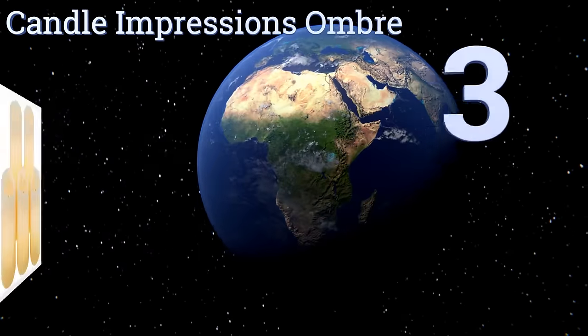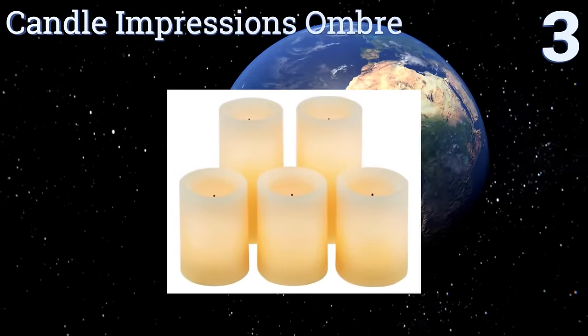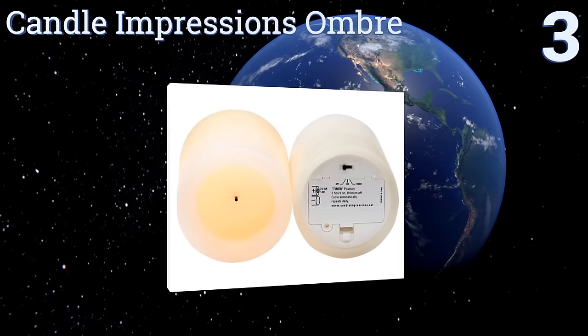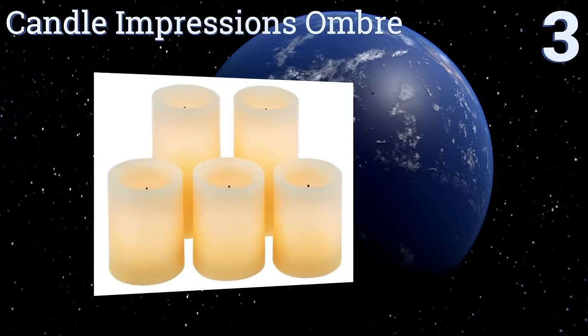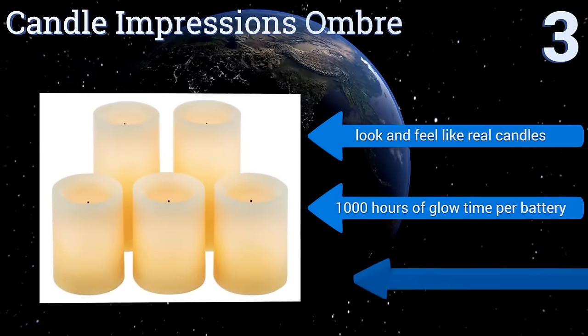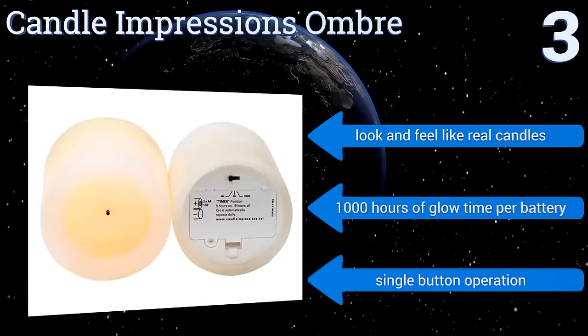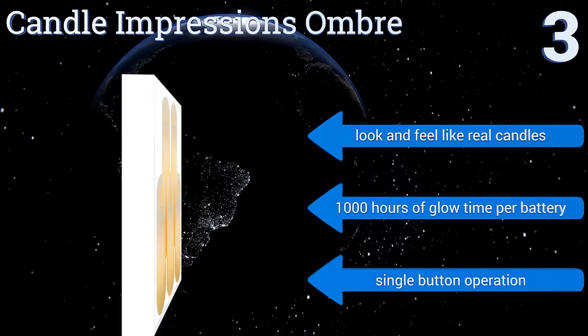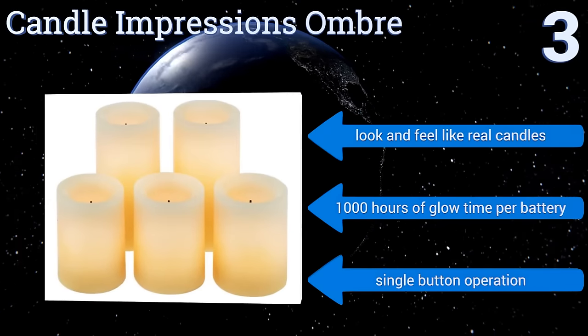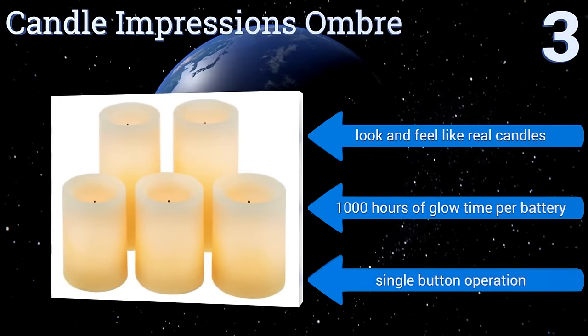Nearing the top of our list at number 3, the Candle Impressions Ombra set includes two 6-inch and three 4-inch units that can be strategically placed around your home for the ideal level of illumination. Each one is designed to fade from bright in the centre to dark at the top and bottom. They look and feel like real candles and provide 1,000 hours of glow time per battery. They offer a single button operation.